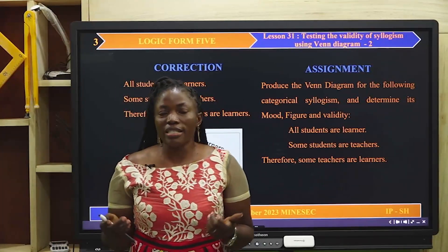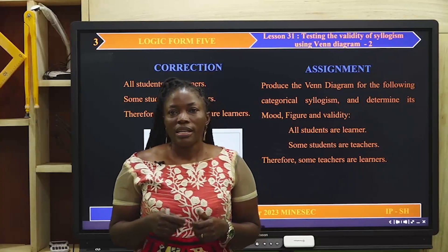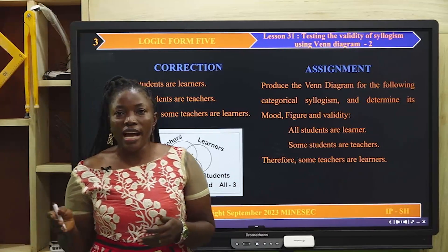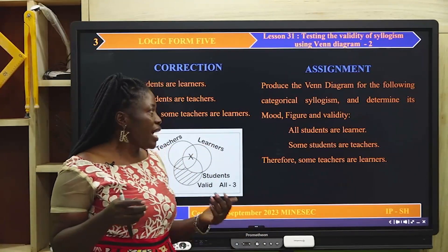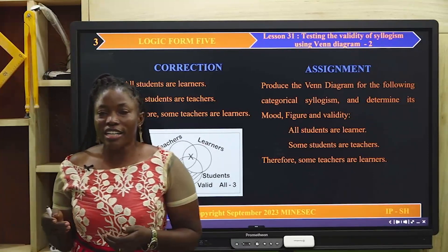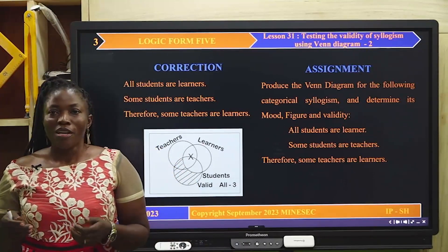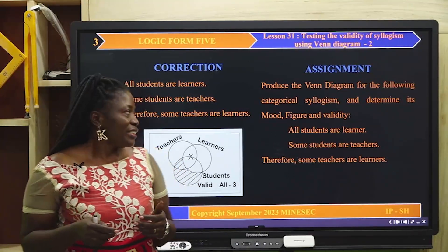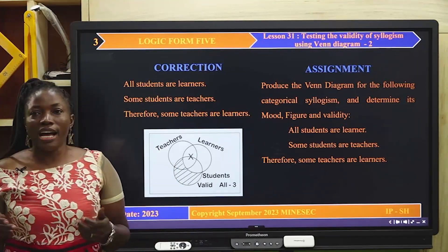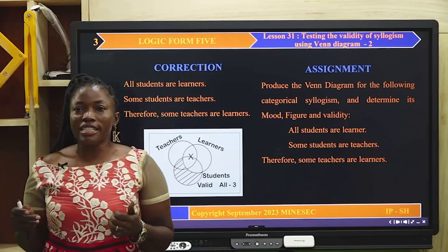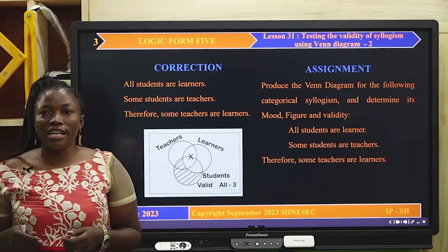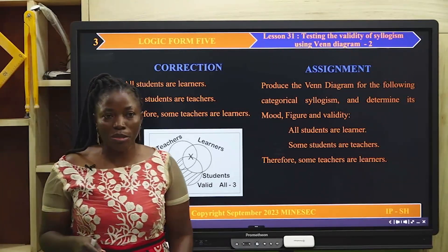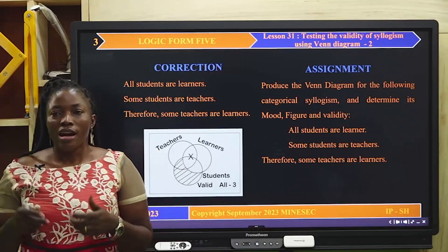Before we go into our lesson proper, take out your assignment — the assignment given to you in your previous lesson. You were required to produce a Venn diagram for the following categorical syllogisms: All students are learners. Some students are teachers. Therefore, some teachers are learners. You were required to identify the mood and figure.